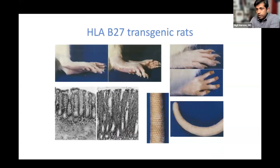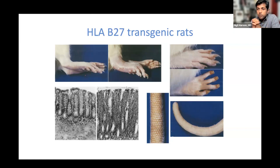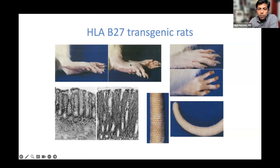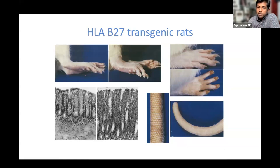However, HLA-B27 also carries a risk of ankylosing spondylitis. When human HLA-B27 is overexpressed into rats that normally lack HLA molecules, they develop arthritis, nail changes of psoriasis, skin changes of psoriasis, and significant colitis. So B27 overexpression can lead to disease across joints, spine, skin, and gut — confirming B27's pathogenic potential in this animal model.